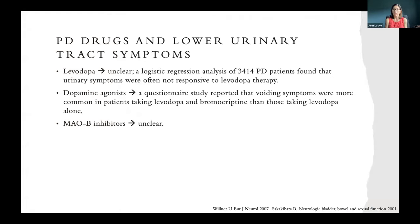Switching to treatments available for these patients: when looking at Parkinson's drugs and lower urinary tract symptoms, it's unclear if levodopa has any effect on the urinary tract. A logistic regression analysis of over 3,000 patients found that urinary symptoms were often not responsive to levodopa therapy. A questionnaire study reported that voiding symptoms were more common in patients taking levodopa and bromocriptine than those taking levodopa alone. With MAO-B inhibitors, we don't have any understanding of how this drug class affects lower urinary tract symptoms.